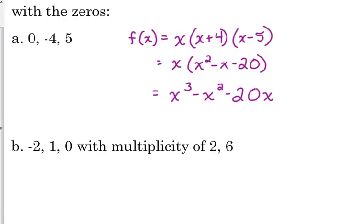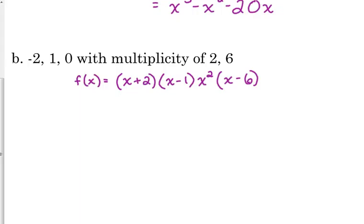And then the question may be phrased where they write out multiplicity of 2 in the problem. So let's see what this equation would look like. So we've got negative 2 is a root, so x plus 2 is a factor. Positive 1 is a root, so x minus 1 is the factor. 0 has a multiplicity of 2. Well, if x gave us 0 as one of the zeros, then x squared is going to give us the multiplicity of 2. And then if we have a root of 6, then x minus 6 is our linear factor.